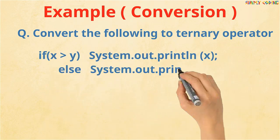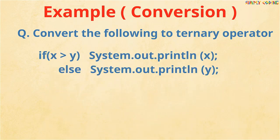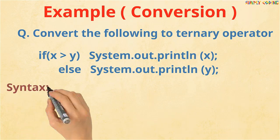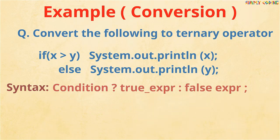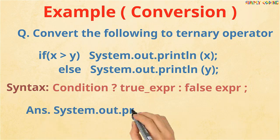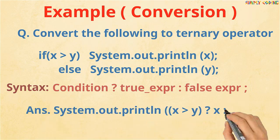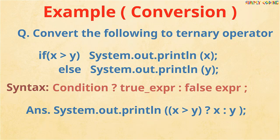For example, convert the following to a ternary operator. The ternary operator has a condition, then a question mark, then the true condition, a colon, followed by the false condition. To convert, put in the condition first, followed by the true branch, then the false condition. Do practice some more programs on if and switch before you move to the next topic. For more videos, questions, and programs to practice, you can visit my website.